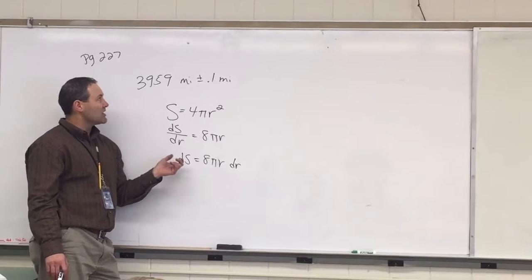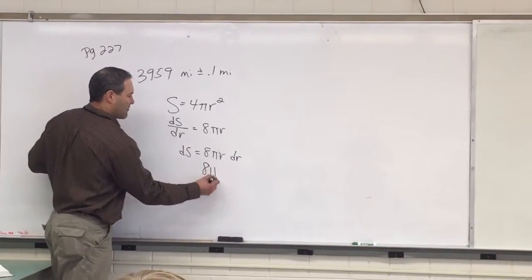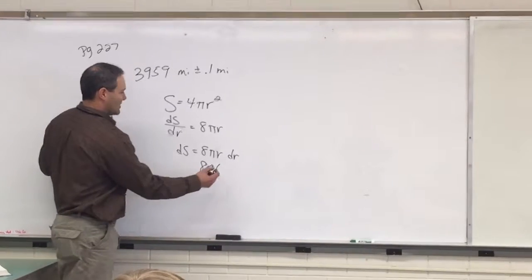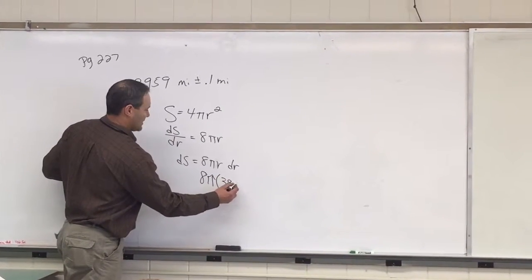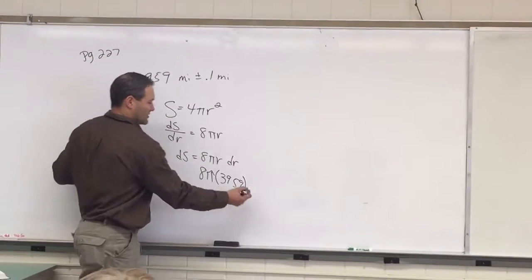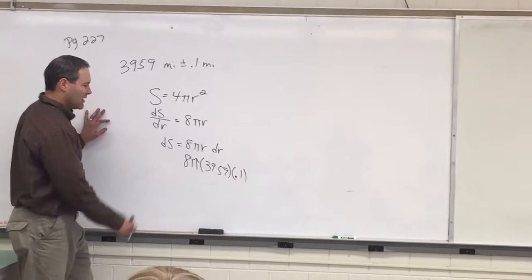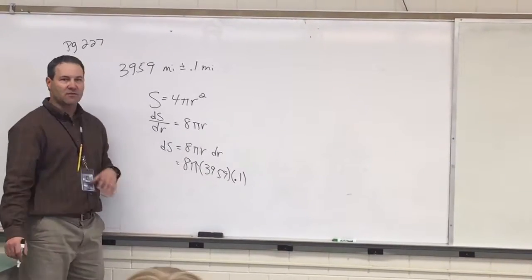Okay, so our change in surface area would be 8 pi. Our radius would be 3,959. And our tolerance or error would be 0.1. And that will give you the change in the surface area.